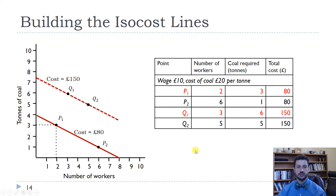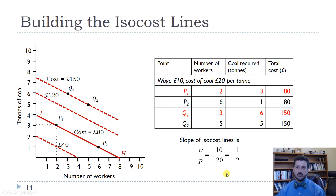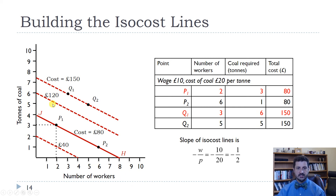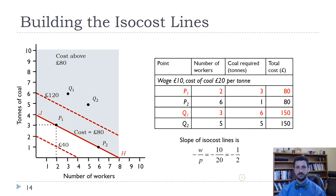As we move out from the origin, we get more expensive isocost lines. Here we have a 40-pound isocost line, a 120-pound isocost line. The slope of the isocost line is always the same as long as prices don't change — the slope is minus the wage divided by the price. With a wage of 10 and coal price of 20, that's minus one half. All of these lines are parallel, meaning they all have the same slope, because the wage and price of coal are constant. Anything below the 80-pound line costs less, but you might not have the option of spending less.